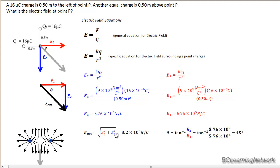So using the Pythagorean theorem, E1 squared plus E2 squared, square rooted, gives me 8.2 times 10 to the fifth newtons per Coulomb for the magnitude of E net.